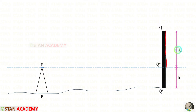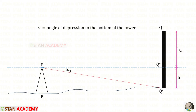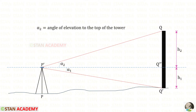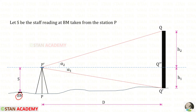Let us keep this height as h2 and this height as h1. Using the telescope in the theodolite, we focus the bottom of the tower and note the angle alpha 1, which is the angle of depression to the bottom of the tower. Then we focus the top of the tower and take reading alpha 2, which is the angle of elevation to the top. At the benchmark, we keep a staff, and s is the staff reading taken from station P.